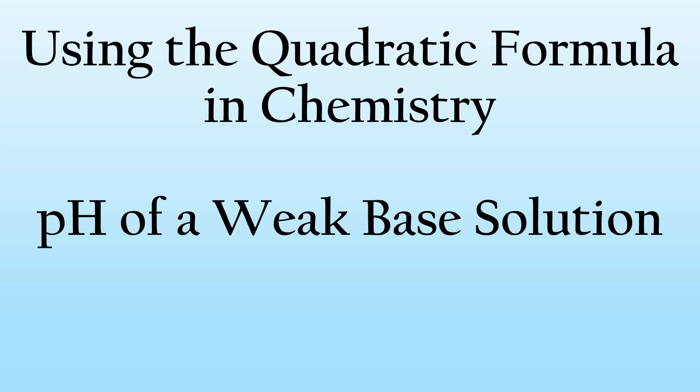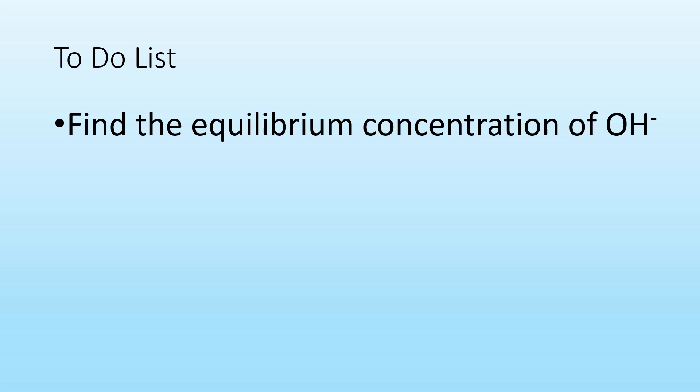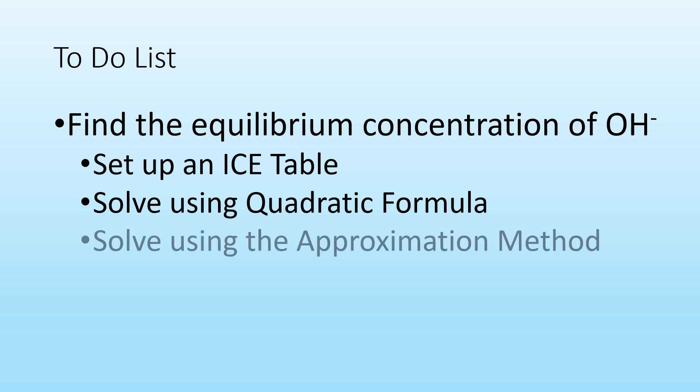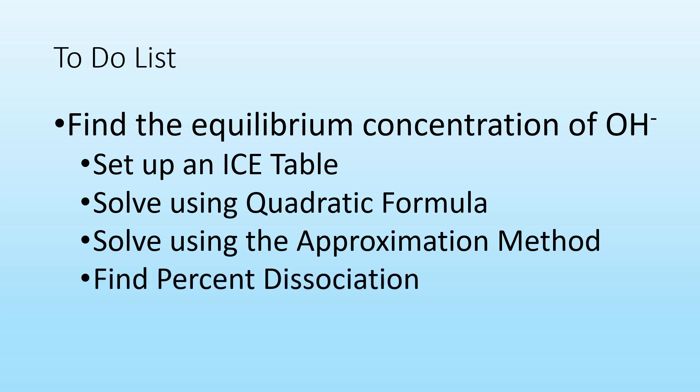In this lecture, we'll solve for the pH of a weak base solution. To solve for the pH of a basic solution, we'll need to find the equilibrium concentration of hydroxide. To do this, we'll set up an ICE table, use the quadratic formula to find the equilibrium concentration, and I'll show you how to bypass the quadratic formula and use the approximation method. I'll find the percent dissociation to test the approximation method, and finally find the pH of the solution.